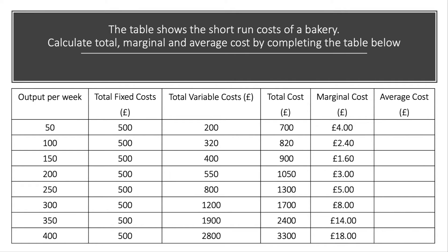The marginal cost, for example, of the first 50 units is £4 each, that drops to £2.40, £1.60, and then marginal cost is assumed to rise. This is mainly because of the law of diminishing returns — we may be moving beyond the optimal mix of fixed and variable factors. Perhaps the bakery is running up against capacity constraints, having to pay more overtime, and machines are wearing out more quickly or needing more frequent maintenance. So we're assuming the marginal cost eventually starts to rise, and by the time we get to the 400th unit of output, the marginal cost is pretty high indeed.